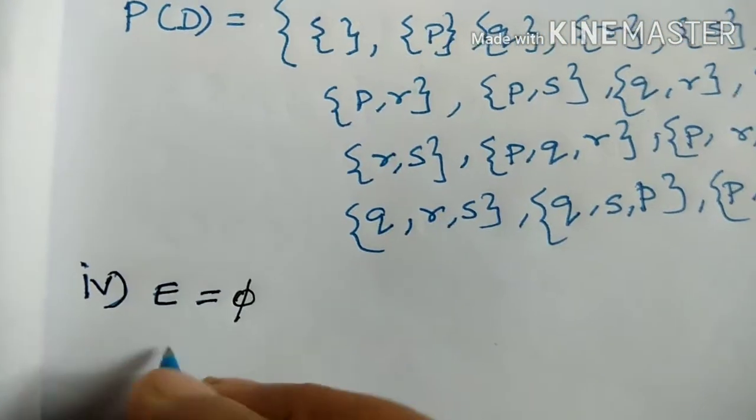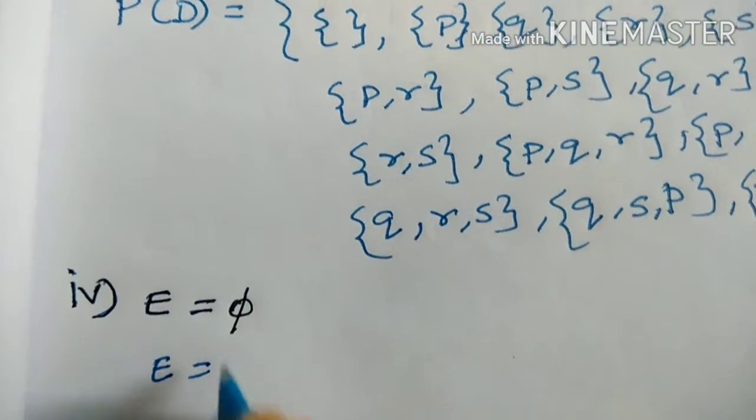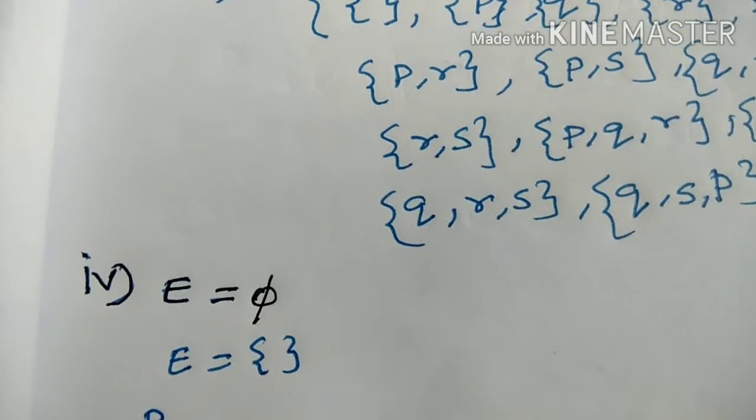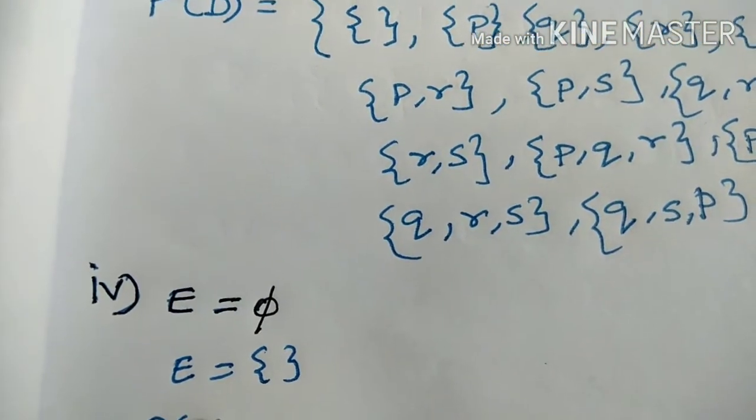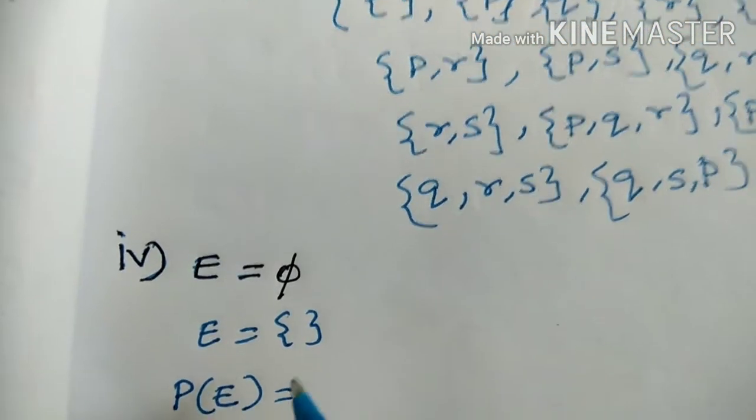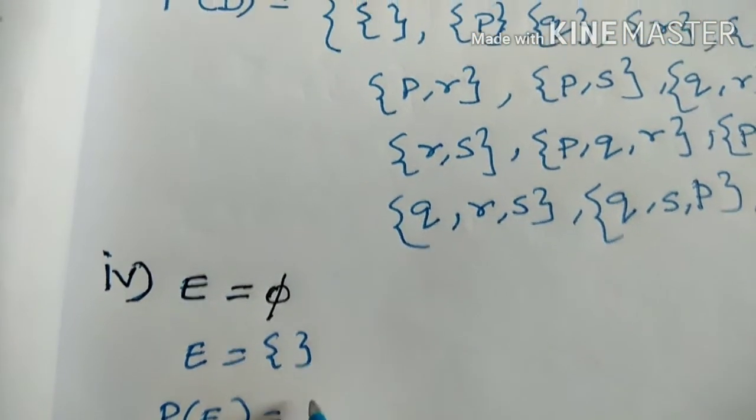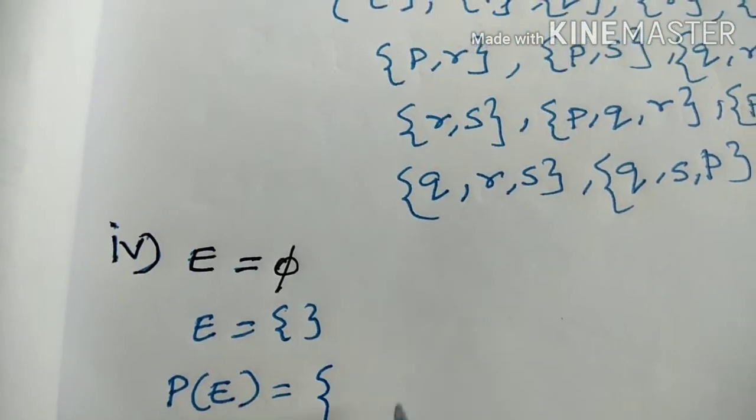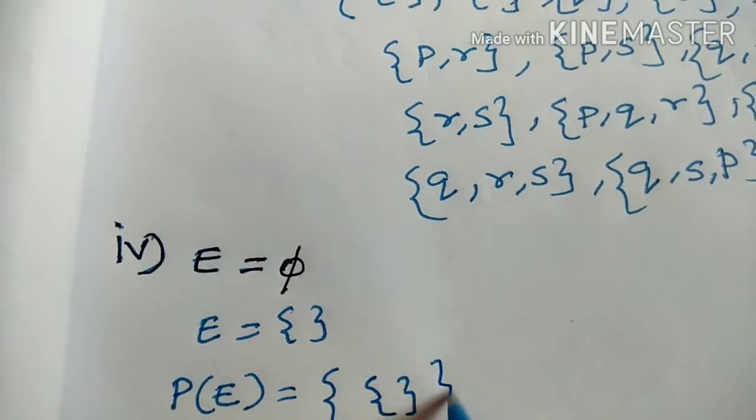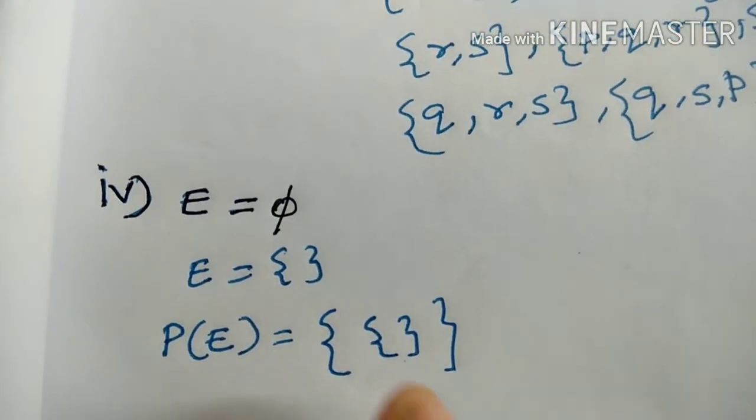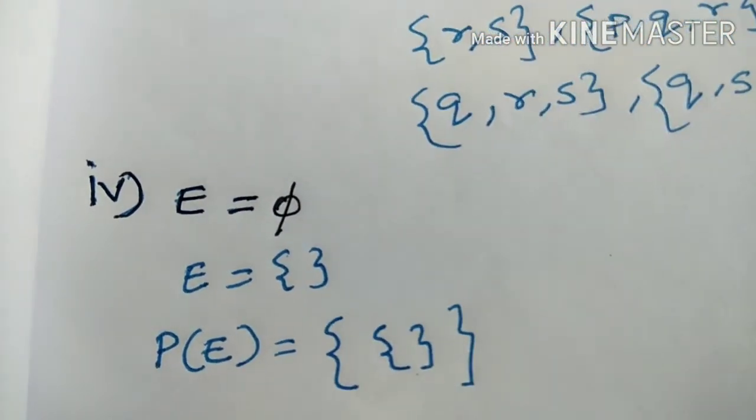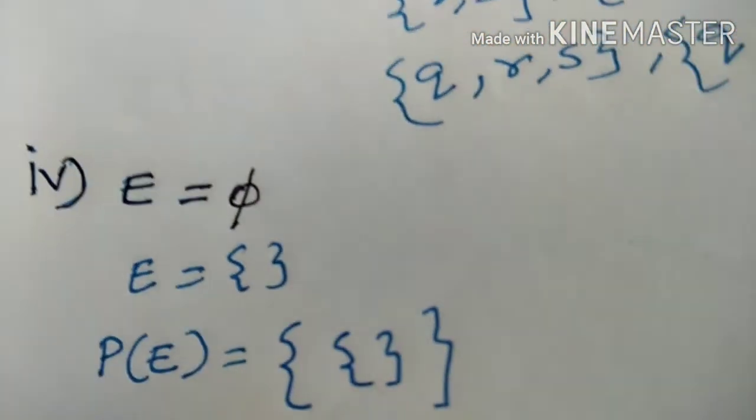Now, the fourth question. If E equal to null set, the power set is the power set of the null set. No elements. The power set of E contains the null set.